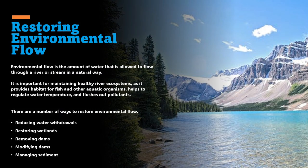The restoration of environmental flow is important for maintaining healthy river ecosystems, as it provides habitat for fish and other aquatic life. There are several ways we can restore environmental flow. The first is reducing water withdrawals, which can be done by improving water efficiency, using water conservation measures, and reducing the amount of water used for irrigation.